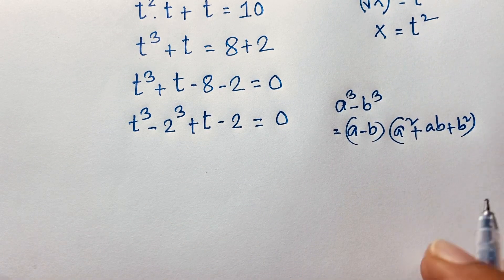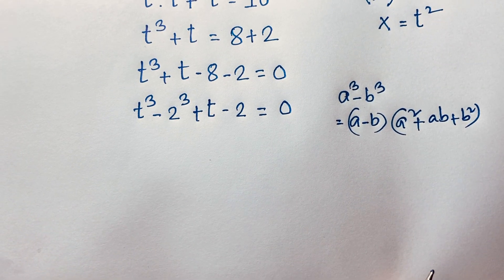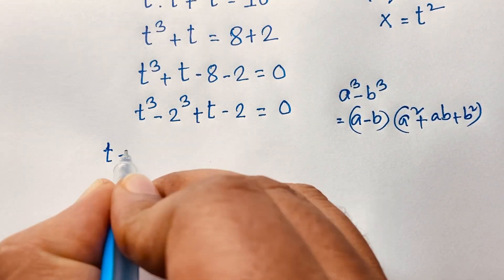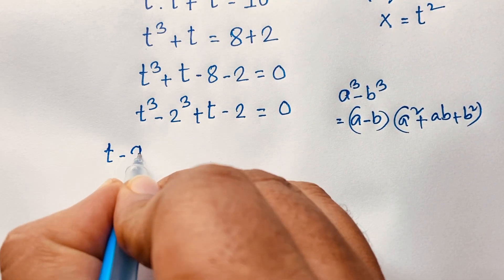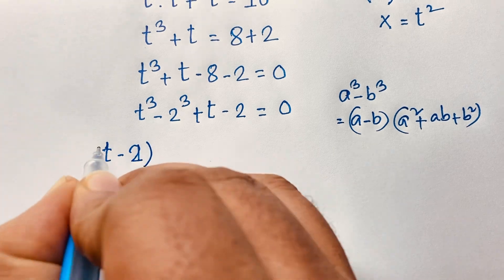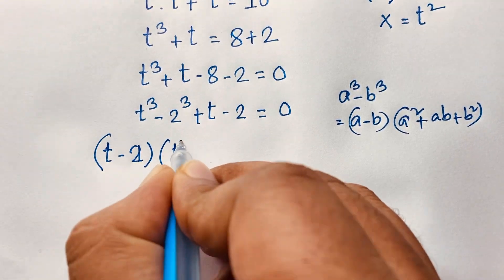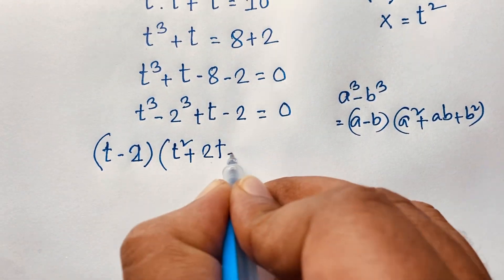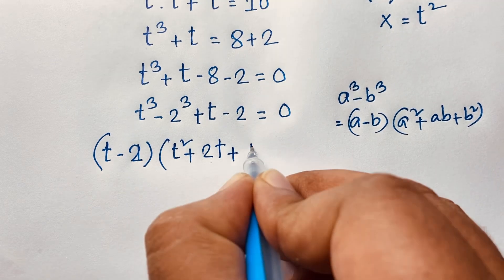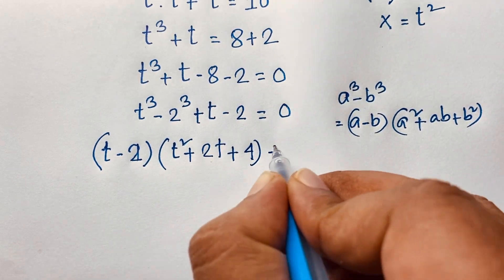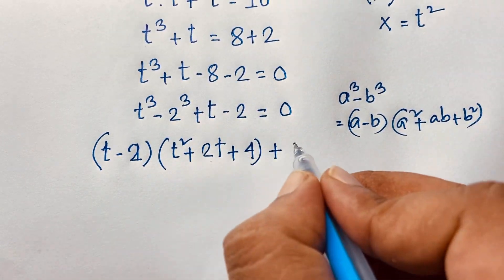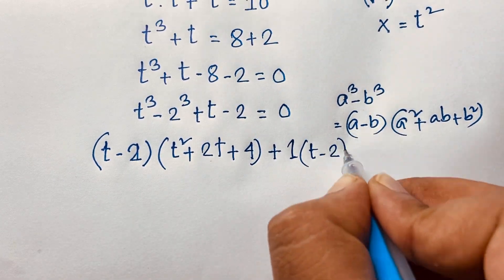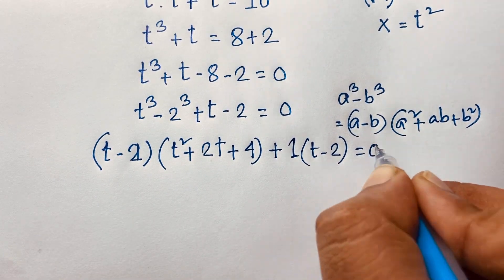Applying this law: t cubed minus 2 cubed becomes t minus 2, times t squared plus 2t plus 4. Then from the remaining terms, t minus 2, we factor out 1, giving plus 1 times t minus 2, equals 0.